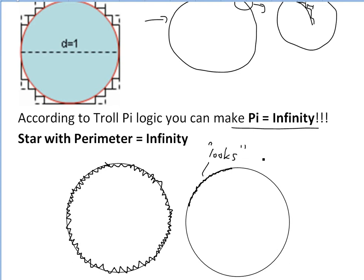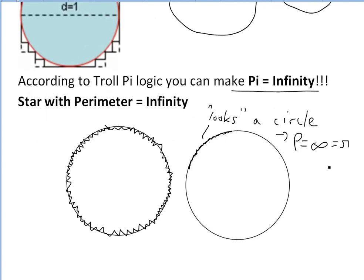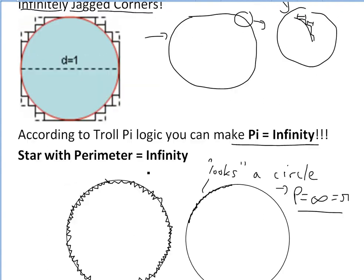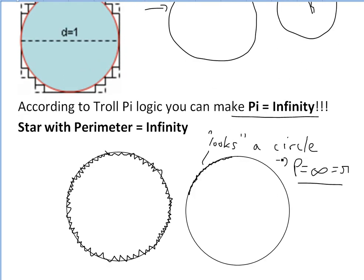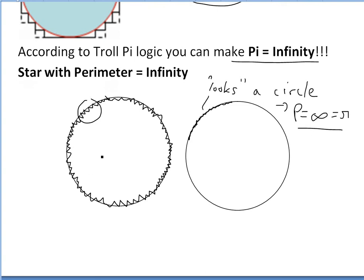Yes, it looks like a circle, but with a perimeter equal to infinity — or equal to π, since the diameter is 1. So you can make π equal to anything if you're allowed to do this. When you zoom in at any point, even if the perimeter is just a hundred thousand rather than infinity, you're going to get those same jagged lines every time you zoom in.